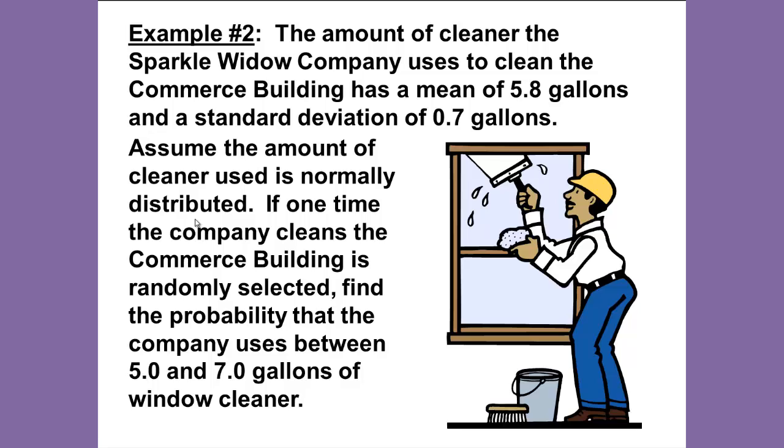Let's look at example number two. The amount of cleaner that the Sparkle Window Company uses to clean the Commerce Building has a mean of 5.8 gallons and a standard deviation of 0.7 gallons. Assume the amount of cleaner used is normally distributed. If one time the company cleans the Commerce Building is randomly selected, find the probability that the company uses between 5.0 and 7.0 gallons of window cleaner.